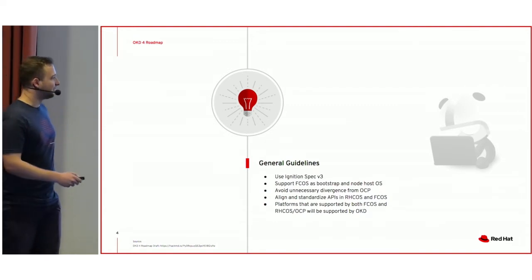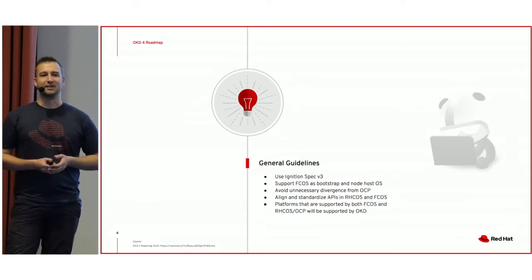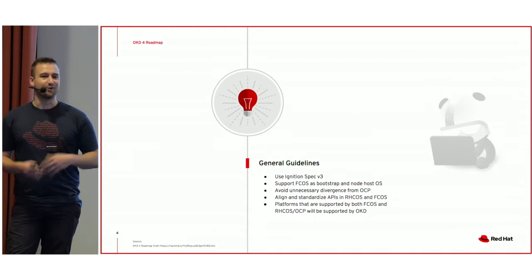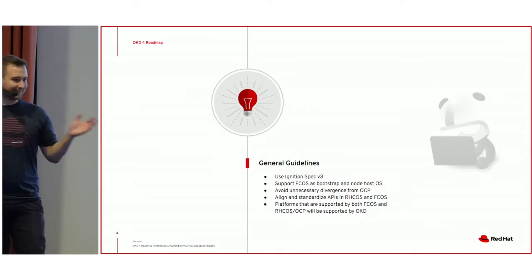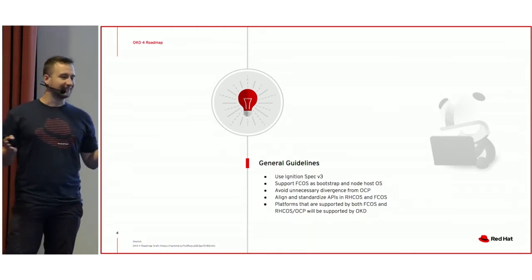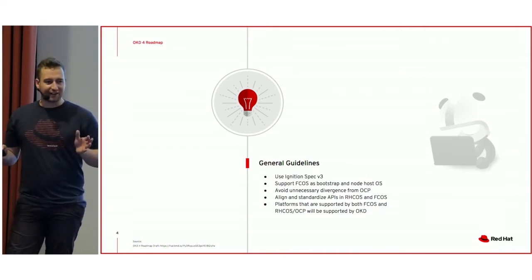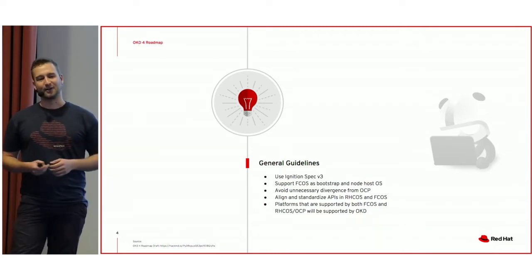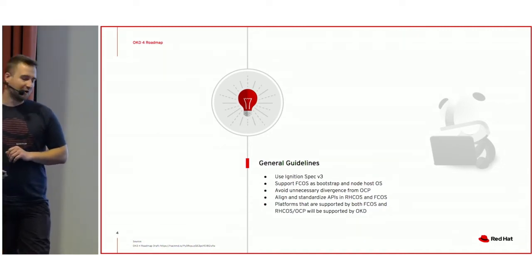FCOS is Fedora CoreOS. The OCP platform is RCOS — Red Hat CoreOS, or RELCOS. There's different names for it. And as it's not a standalone product, it's not really a thing. But in the Fedora world, we have Fedora CoreOS, which is sort of the Fedora atomic successor.